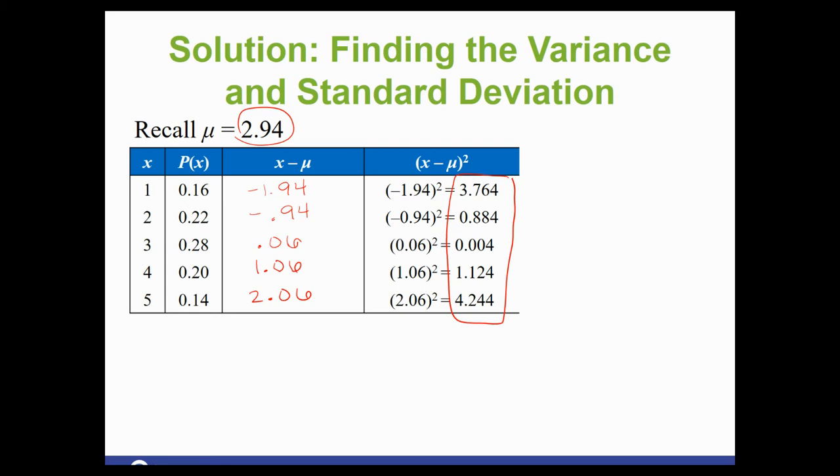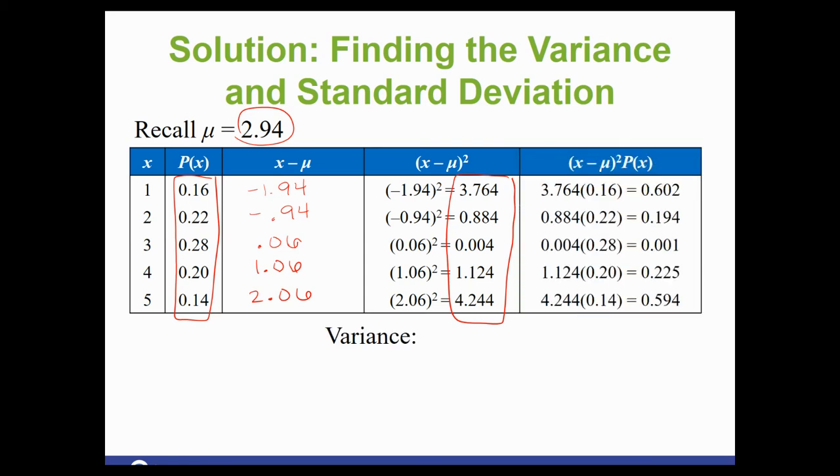Then we have to take each one of those numbers times that probability. And there are numbers right here. Once we have done that step, then we need to add them up. So here's where we're adding them up either by hand or using one of our stats in your calculator.